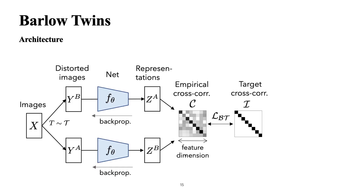Now let's understand the Barlow Twins architecture. First, we feed an image in and perform image augmentation to produce a distorted image. We feed it into a neural network — this can be ResNet-50 or anything similar. After that, we have a representation layer, also called the projector layer. We multiply these together in what is called cross-correlation, and we try to get one on the diagonal terms and zero on the off-diagonal terms to extract maximum information.